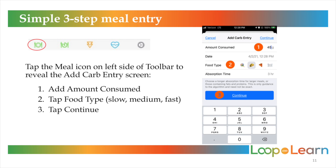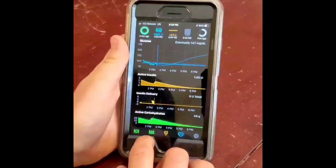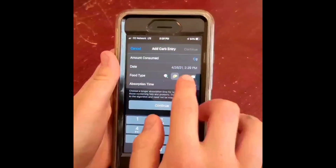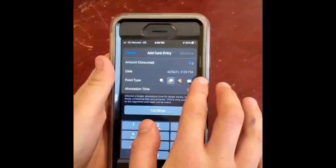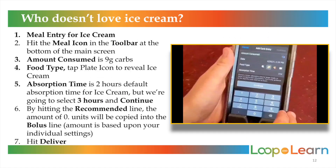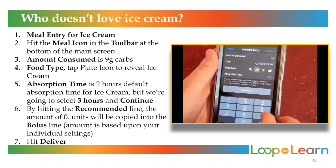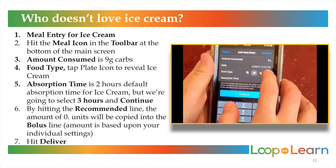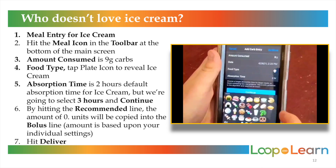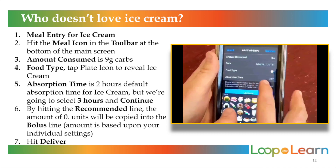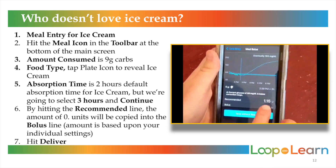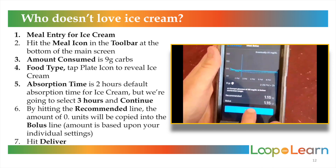Let's do a simple three-step meal entry. First, tap the meal icon on the left side of the toolbar to reveal the Add Carb Entry screen. Add the amount consumed, tap the food type, and tap Continue. Who doesn't love ice cream? Let's put in 9 grams. Tap the food type right there to reveal ice cream — it'll be a two-hour absorption time. Then hit Continue, and deliver.